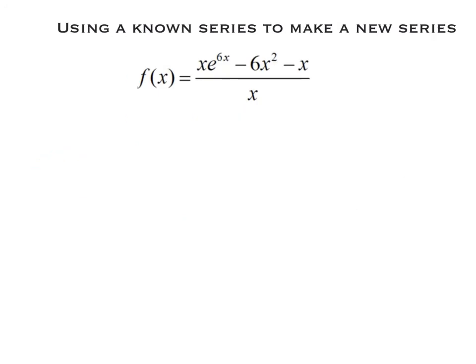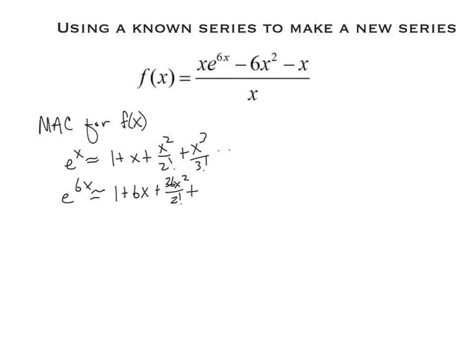Making a new series out of a known series. Now, I've tried to throw as much in this as I possibly could. You'll see the e to the 6x, and that's where I'm going to start. So we are going to make the Maclaurin series for f of x. So I'm going to begin by saying, e to the x is approximated by 1 plus x, plus x squared over 2 factorial, plus x cubed over 3 factorial. So, e to the 6x, every time I see an x, I'm going to replace it with a 6x. So, 6x squared, I've got 36x squared over 2 factorial. And here I've got 6 cubed is 216x cubed over 3 factorial. You should always do any kind of substituting first. 6x was put in place of x, so we do that first.